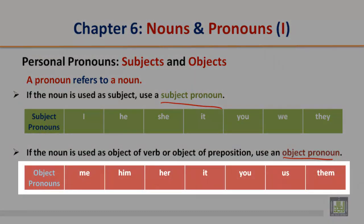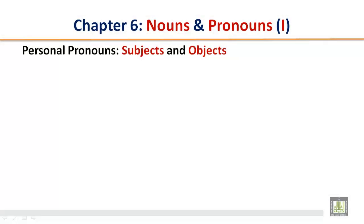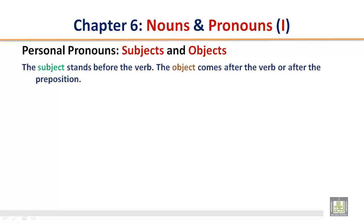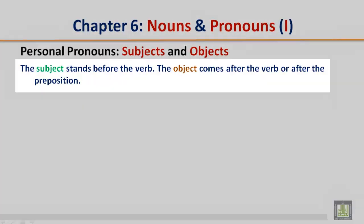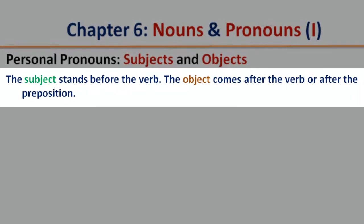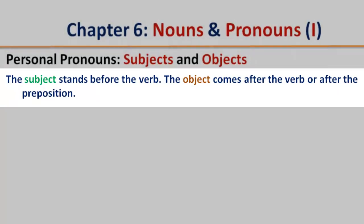Object pronouns: me, him, her, it, you, us, them. Personal pronouns: subjects and objects. The subject stands before the verb. The object comes after the verb or after the preposition.